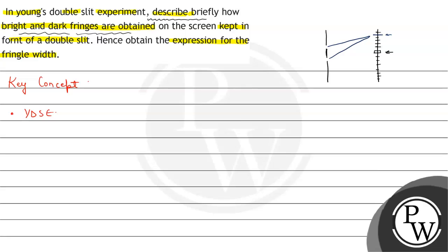This phase difference is different for each point on the screen, and hence the intensity is also different for each point. As intensity varies, we obtain bright and dark fringes due to constructive and destructive interference. This is the main reason.